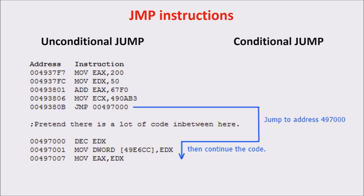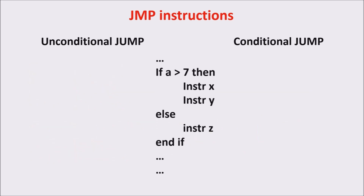Conditional jumps are used to implement any conditional statement, like if-else, or to implement the loop logic. Unconditional jumps are used to implement logic that doesn't require any condition, and they are also used in if-else and in loops. It can be used to jump out of the loop, and it is also used in procedures to break the flow of the program.